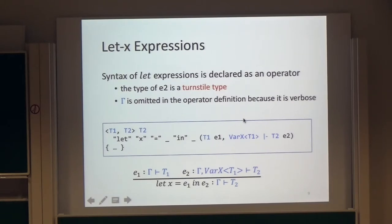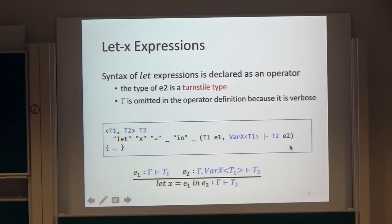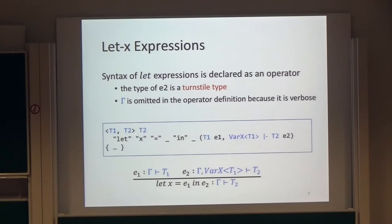Then, the syntax of let expressions is declared as an operator. Here, E2 has a type Bar X T1 turnstile T2. This is a turnstile type in ProTJ2. Note that gamma is not appeared in this definition — in ProTJ2, gamma is omitted in the operator definition because it varies.